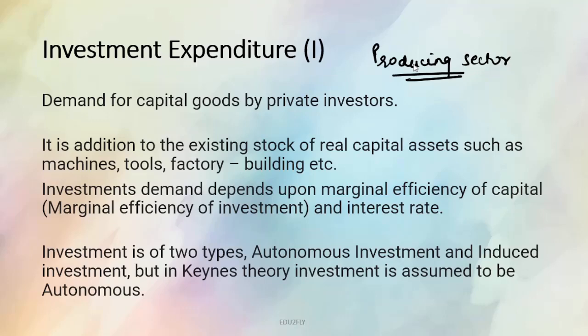Jaise ki consumption expenditure do cheezon pe depend kar raha tha — one was the disposable income, other was the propensity to consume — yahaan pe investment demand kis pe depend karti hai: marginal efficiency of capital. Investment bhi do tarike ki hoti hai: autonomous or induced investment. What is autonomous investment, what is induced investment — I will put the link in the i-button, so please do watch that.